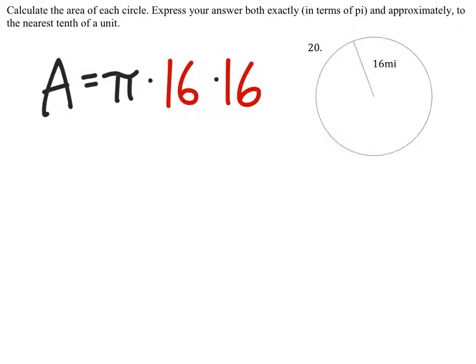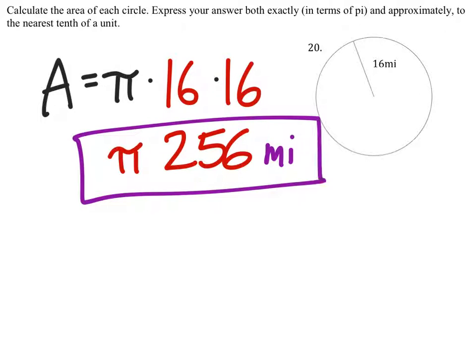16 times 16 would give us 256, and this would be 256π square miles for the exact answer. So I need to multiply that now by π